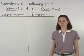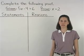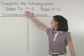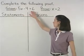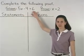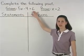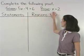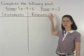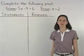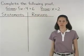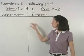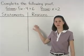In this problem, we're given that 5x minus 4 equals 6, and we're asked to prove that x equals 2. To set up this proof, we start with a two-column chart.